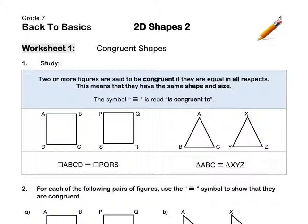The symbol with three horizontal stripes is read 'is congruent to'. This square ABCD is congruent to PQRS. Both squares are the exact same size and they are the same shape. Triangle ABC is congruent to triangle XYZ.